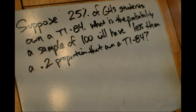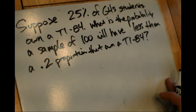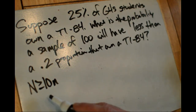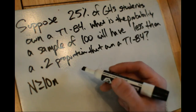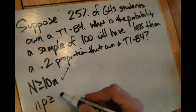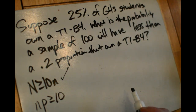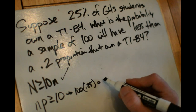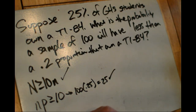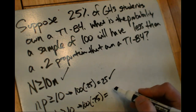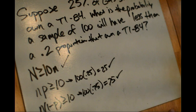The first thing we need to do is check conditions to make sure we can use the normal curve. First, N must be greater than or equal to 10n — we're taking a sample of 100, so GHS needs at least 1,000 students, and it does have about 1,450. We also check that np is greater than or equal to 10: with n = 100 and p = 0.25, that gives 25, so that's met. And n times 1 minus p equals 100 times 0.75 equals 75, so we have at least 10 successes and 10 failures. We can use the normal approximation.